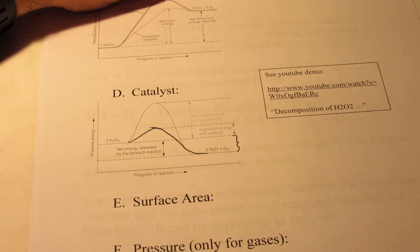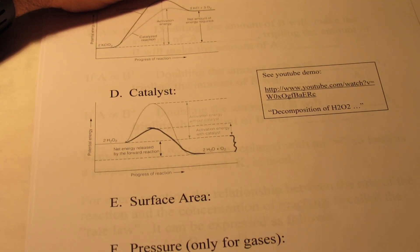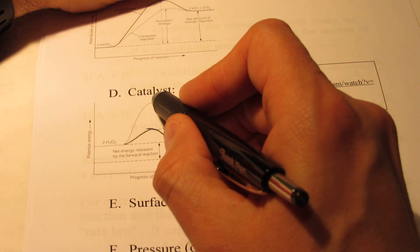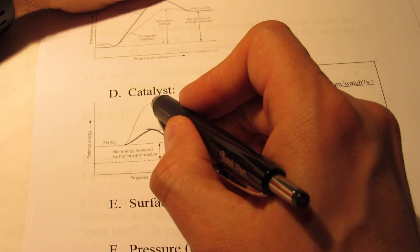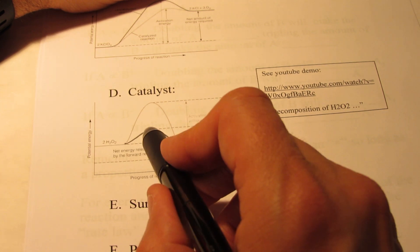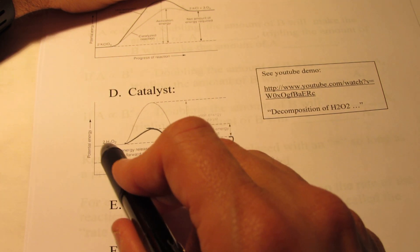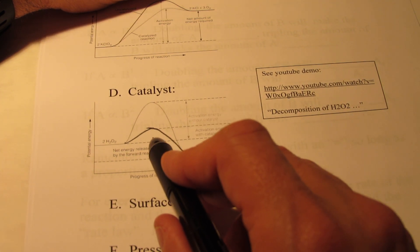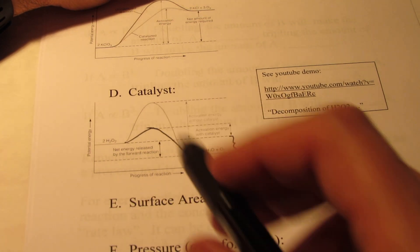Once again, imagine hot wheels. Hot wheels to get over this big hill would take quite a bit of energy, but to get over this smaller hill, it's easier to get them over. So more of these molecules would be able to turn into products. And, as a result, the reaction proceeds faster with a catalyst.